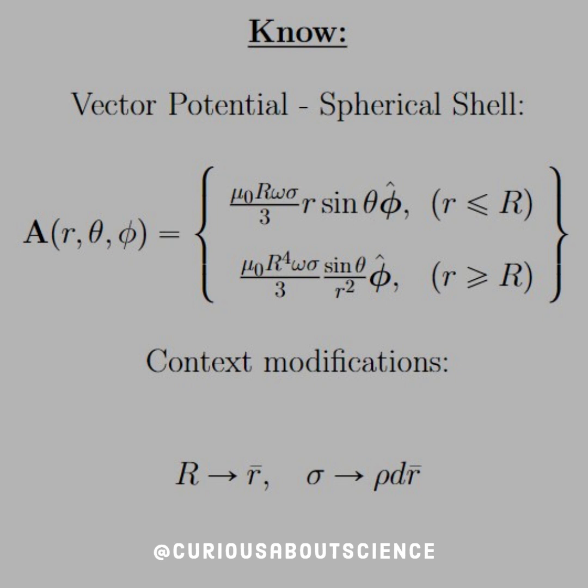But in this case, that was a shell. So we need to modify it for a sphere. So big R goes to little r bar and sigma goes to rho dr bar. And we'll see that we integrate to find it out.